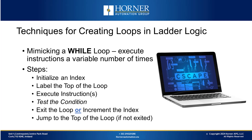Next, we will look at mimicking a while loop, which executes instructions a variable number of times. We first need to initialize an index. Although a while loop does not have an index, we will create one to act as a safety net — a maximum number of times we will go through the loop. This will provide an alternative way to drop out of our loop and help us avoid creating an infinite loop in case the condition for our loop is not met. Once we have initialized our index, we label the top of the loop, execute the instructions we want to repeat, test the condition of our loop, and either exit if the condition is met, or increment our index and jump to the top of our while loop if we have not exited.